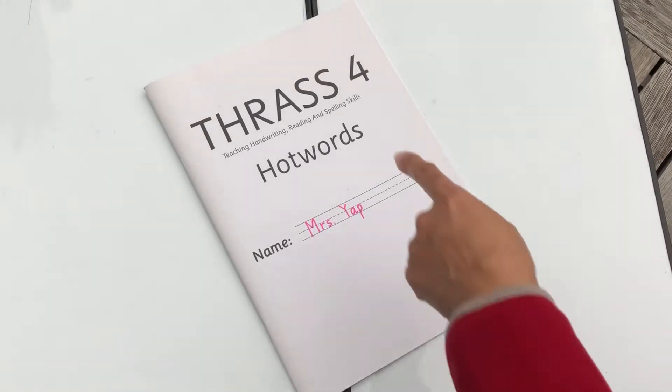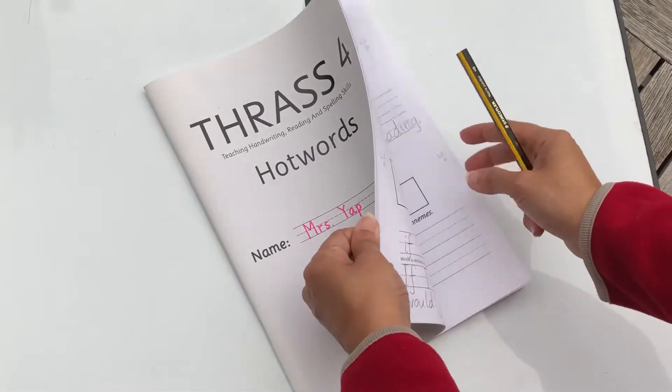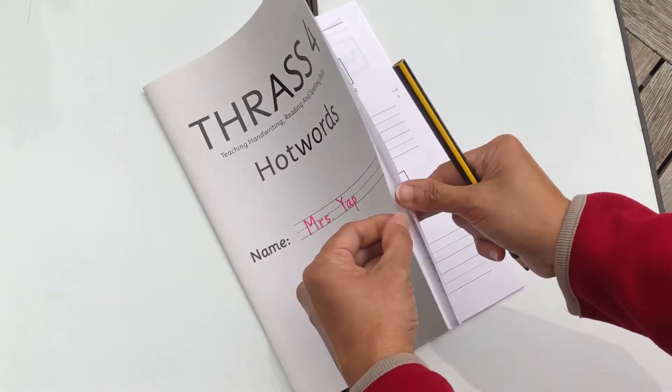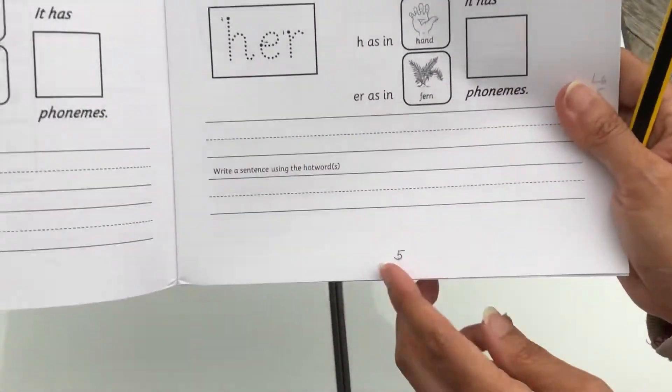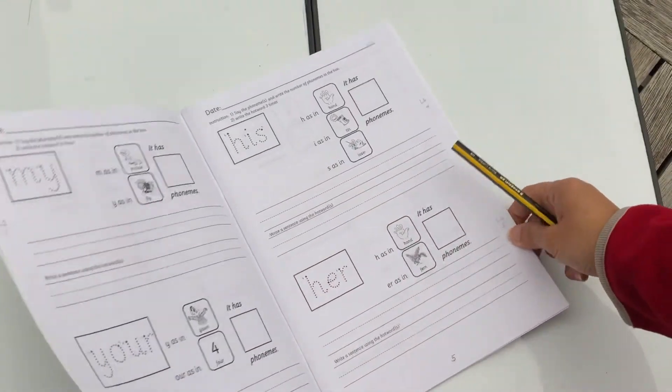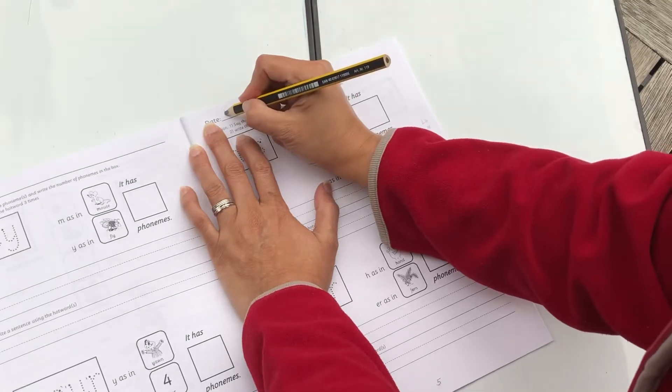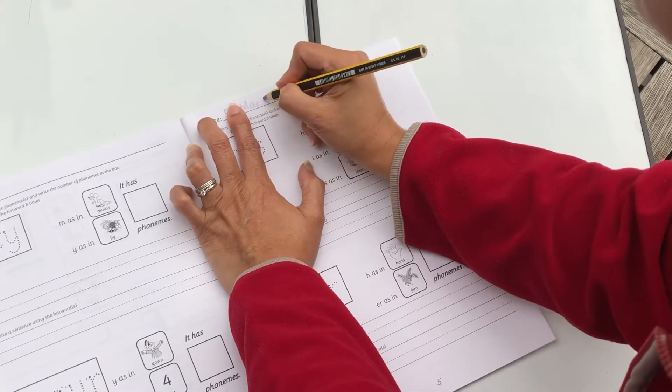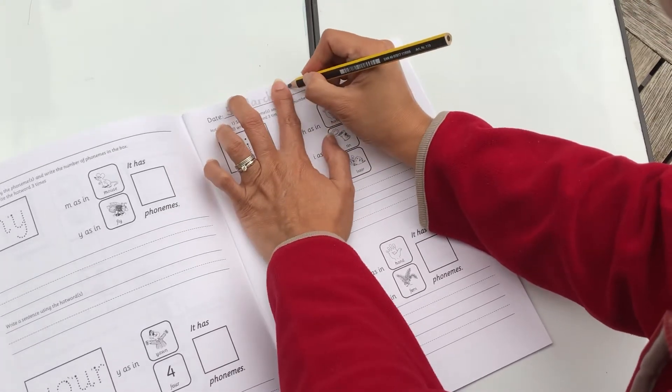So turn your books, your Thrasse Hot Words workbook to page five. If you have a page number in your workbook it's here. So page five. Now write the date today, 5 March 2020.